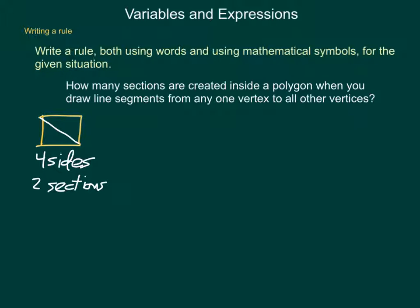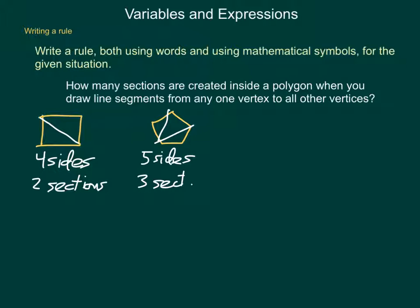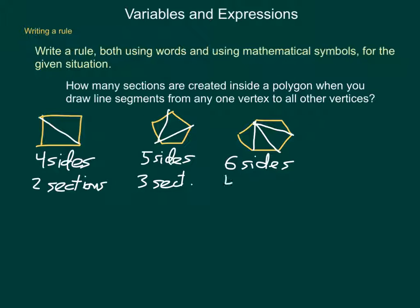What if I move up to the next shape — a pentagon, which is any five-sided shape? Starting at any one vertex and drawing line segments to the other vertices: with five sides, I end up with three sections. What if I start with a hexagon, which is a six-sided shape? Starting at one vertex and drawing out to all vertices not already connected, I end up with four sections.